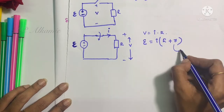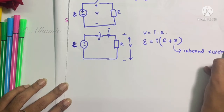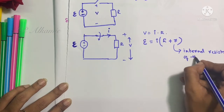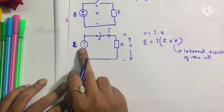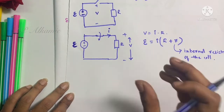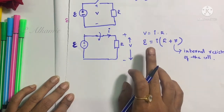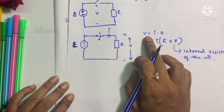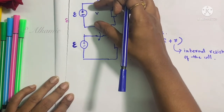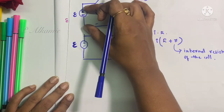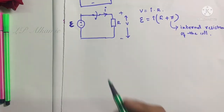But here, with current flowing, the voltage across the terminals will not be equal to EMF E, because EMF is given by E = i(R + r), where small r is the internal resistance of the cell and R is the load resistance. Even though the internal resistance is very small, it still makes some difference when current flows. Therefore, EMF is not equal to voltage when there is current flowing, whereas if you measure voltage across the terminals with no current, it equals EMF E.